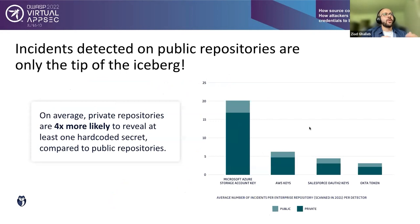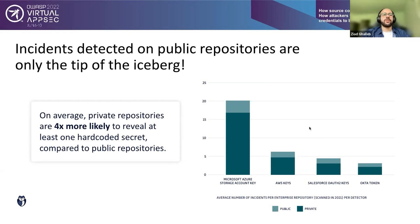We also looked at GitGuardian users' repositories, and public repositories turned out to be just the tip of the iceberg. Private repositories are four times more likely to contain at least one hard-coded secret compared to public repositories for enterprise companies. Microsoft storage account keys, AWS keys, Salesforce, and Okta tokens are among the most common hard-coded secrets found in private repositories.